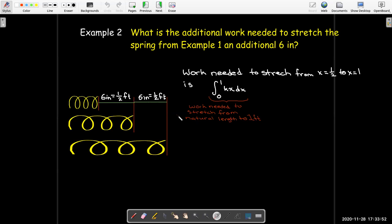what I can do is first calculate the work needed to stretch the spring from its natural length to 1 foot, and then subtract off the work needed to stretch from the natural length to half a foot. And that'll tell me what's the additional work needed. But we can use the properties of the definite integral, and we can write that subtraction of two integrals as the single integral from 1 half to 1.